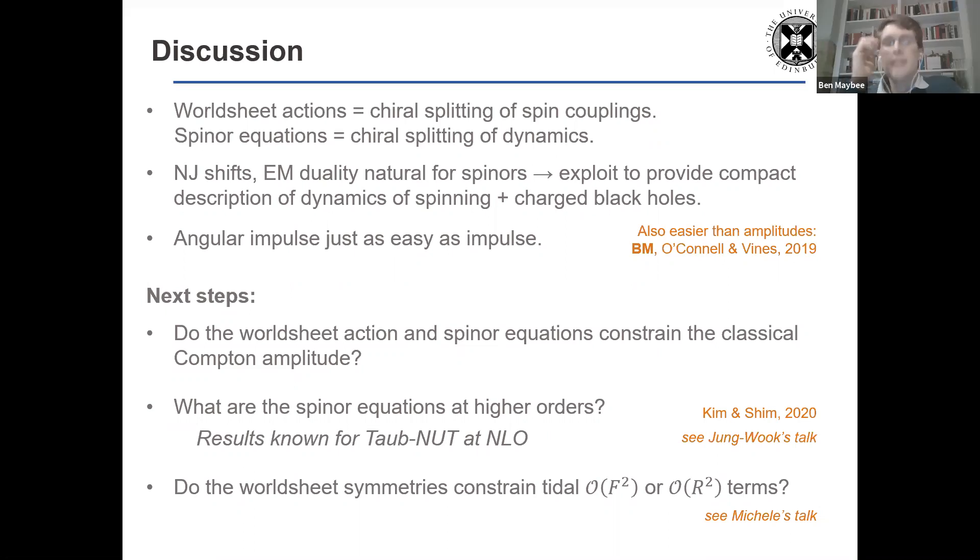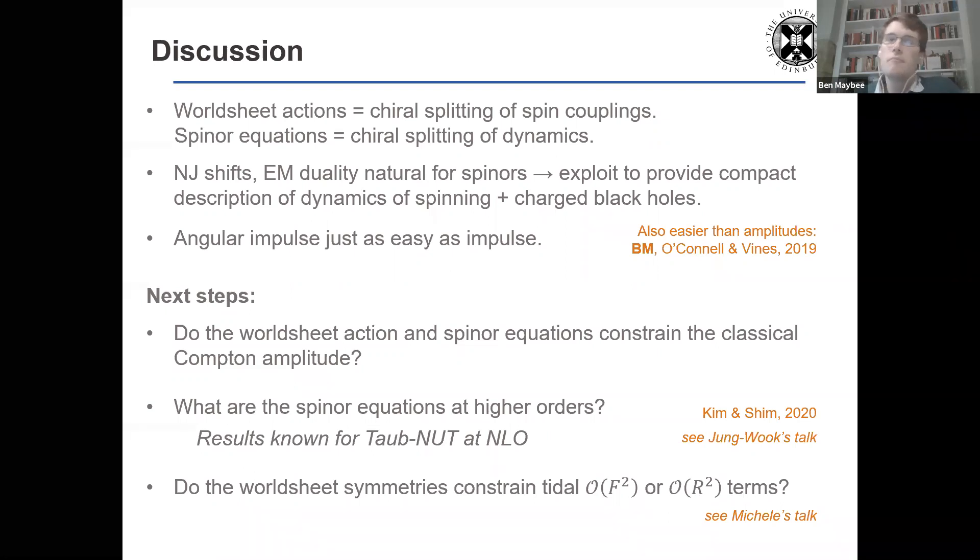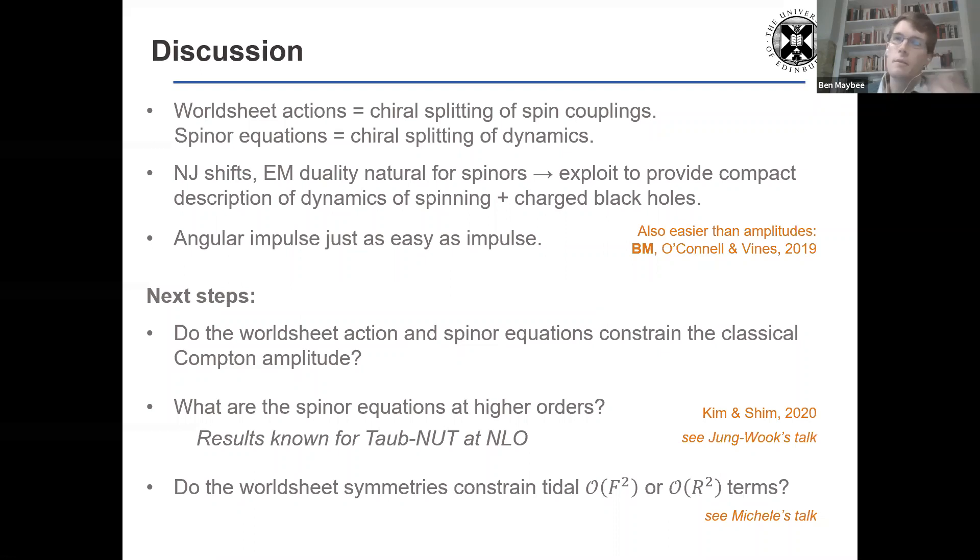Yeah. I mean, we were definitely looking for ways to constrain these terms. And I mean, the goal, I guess, is to get Compton as an output from this. So certainly any way which we can combine the worldline symmetry, worldsheet symmetries to constrain those higher point terms, we'd be very interested in. We've, yeah, that would be very good thing for us to look into. Okay. Thanks. Thank you.